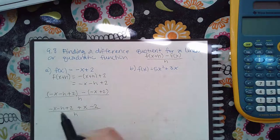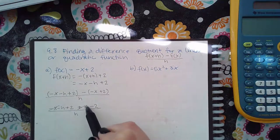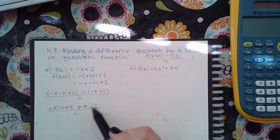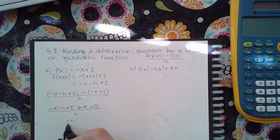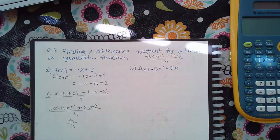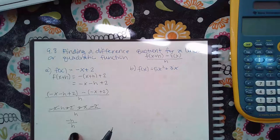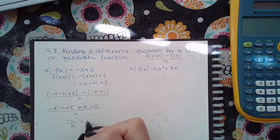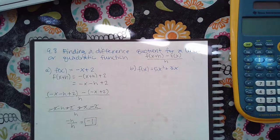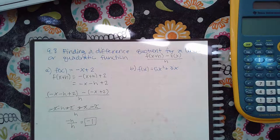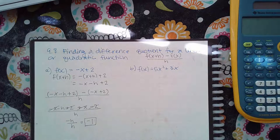And so then notice here that the negative x and the positive x will cancel. The positive two and the negative two will cancel. And what I'm left with is negative h over h. Now here, the h's can reduce. So then I cancel or reduce that h that was in the denominator.